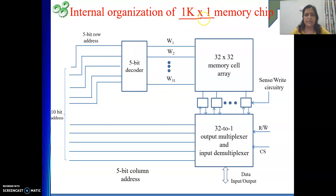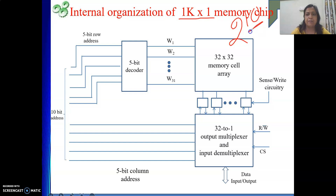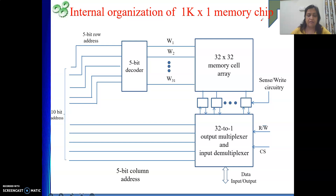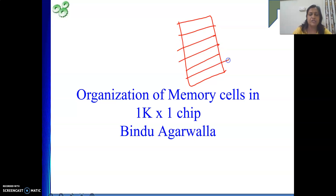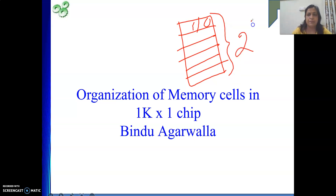In case of 1K by 1, how are we going to design? In case of 1K, we require 10 number of address lines. 1K means 2 to the power 10, that means 10 number of address lines are required. So we have 2 to the power 10 number of locations in memory, and each one will be holding 1 bit of information — 1 location will store 1 bit. And how many such locations are there? 2 to the power 10.